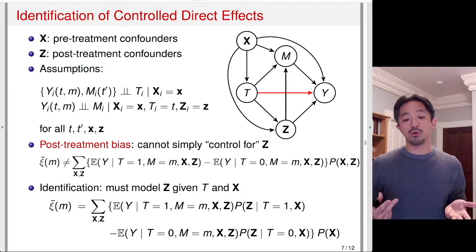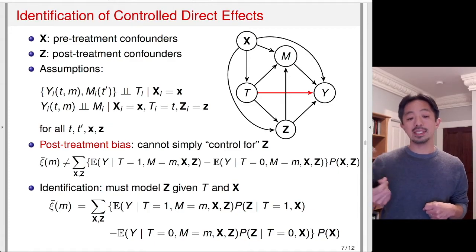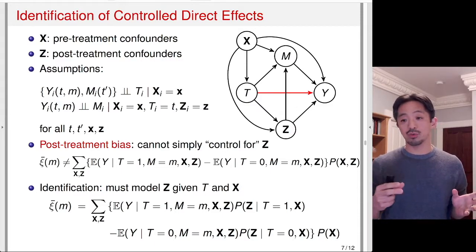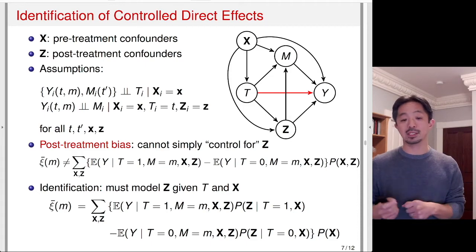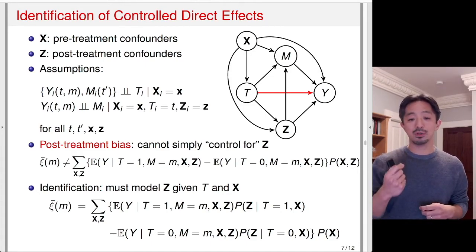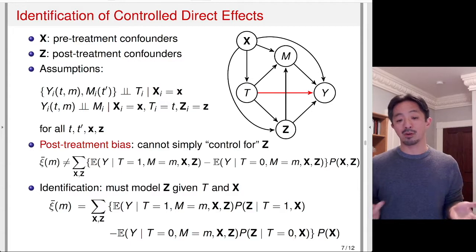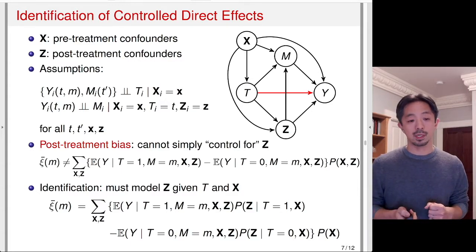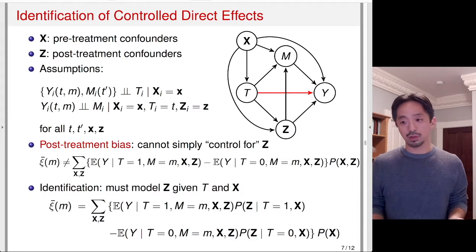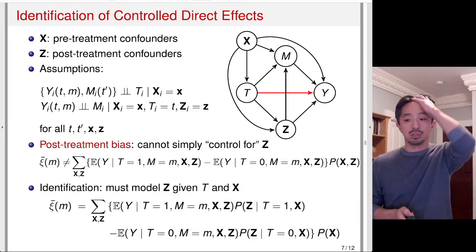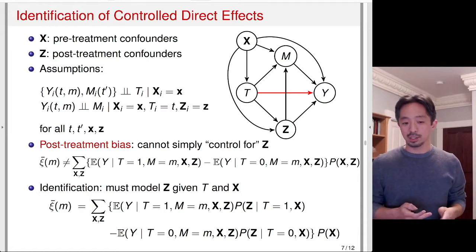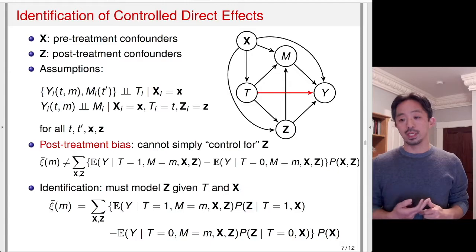The identification formula suggests first predicting Z given T equals 1 and X, and then using that Z and plugging it into the conditional expectation function — the regression function of Y given T, M, X, and Z. That extra step is important because Z is affected by T, so we need to know, when T changes, what value of Z is likely to be realized. For the identification of controlled directed effects, it is not sufficient to simply regress Y on T, M, X, and Z. You must also model Z given T and X.